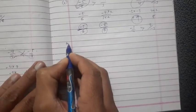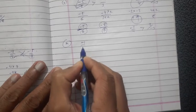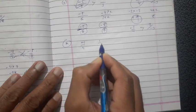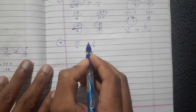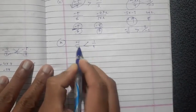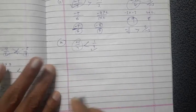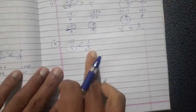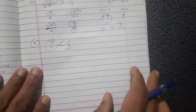Fourth one: minus 1 upon 4 and 1 upon 4. Directly, we know minus 1 upon 4 is less and 1 upon 4 is greater, because 1 upon 4 is a positive number and minus 1 upon 4 is a negative number.